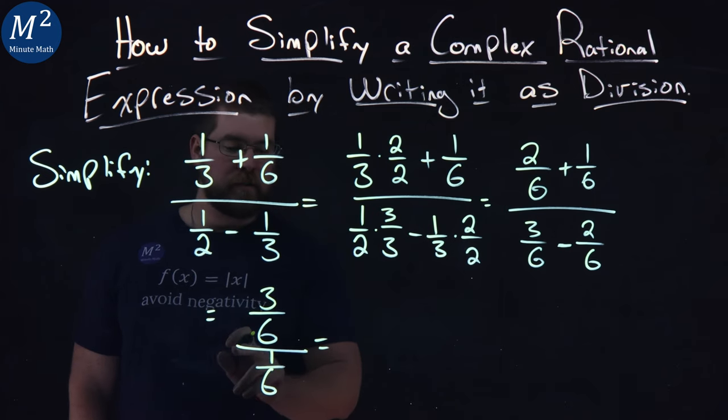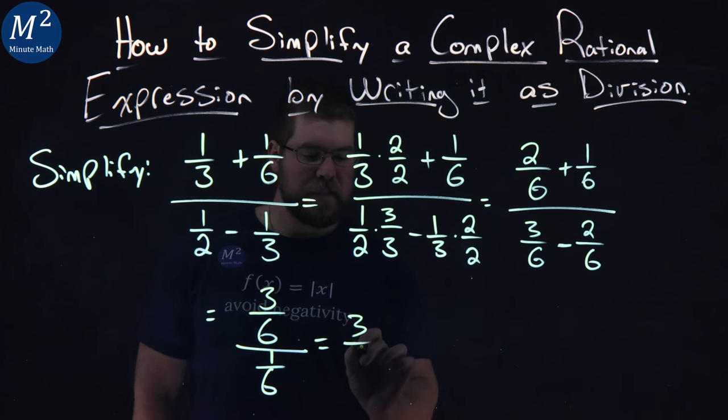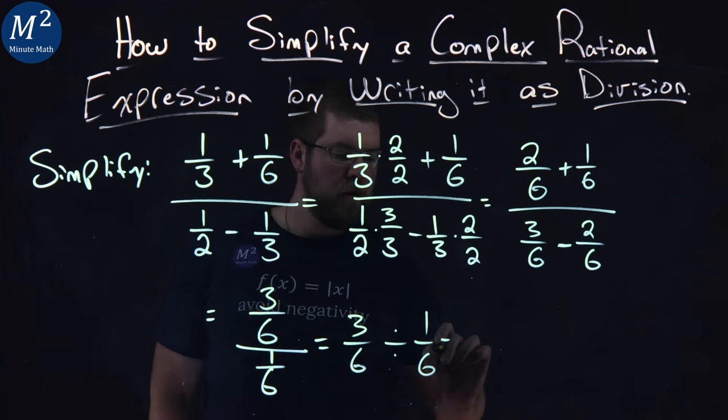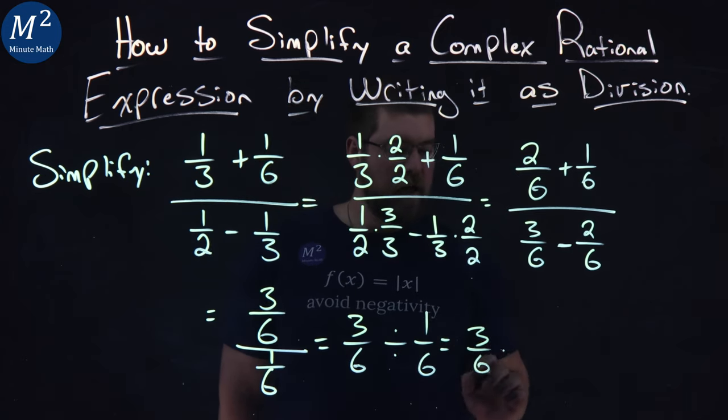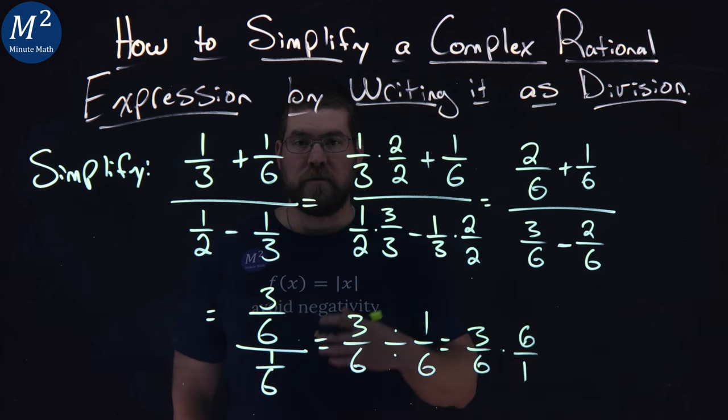Well, just like before, we have a big division sign separating two different fractions. So let's write it as such: 3/6 divided by 1/6. Well, we know division of a fraction is the same as multiplication, so we have 3/6 times 6/1. And this makes it so much easier to simplify.